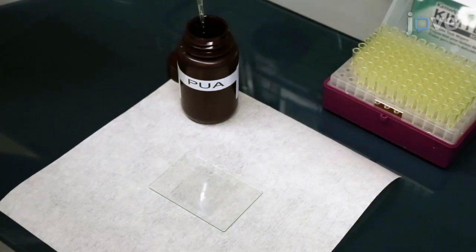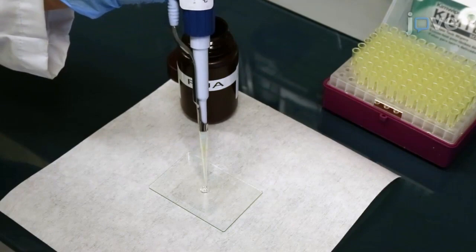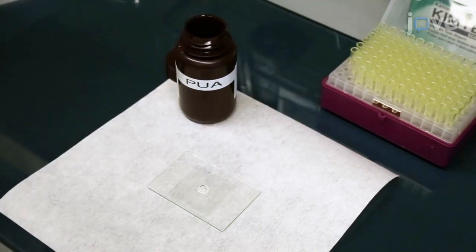Add a 0.1 milliliter drop of UV curable polyurethane acrylate type resin with a viscosity of 257.4 cps on the surface.